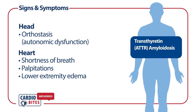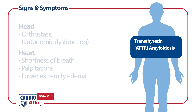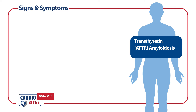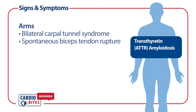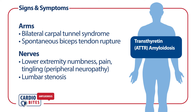In transthyretin amyloidosis, the signs and symptoms are typically confined to the heart and or the nervous system. Additional manifestations that are more common in ATTR compared to AL amyloidosis are bilateral carpal tunnel syndrome, spontaneous biceps tendon rupture, and lumbar stenosis.